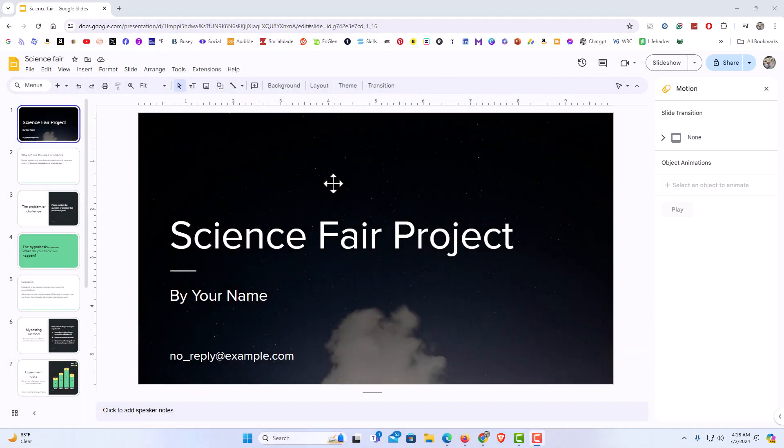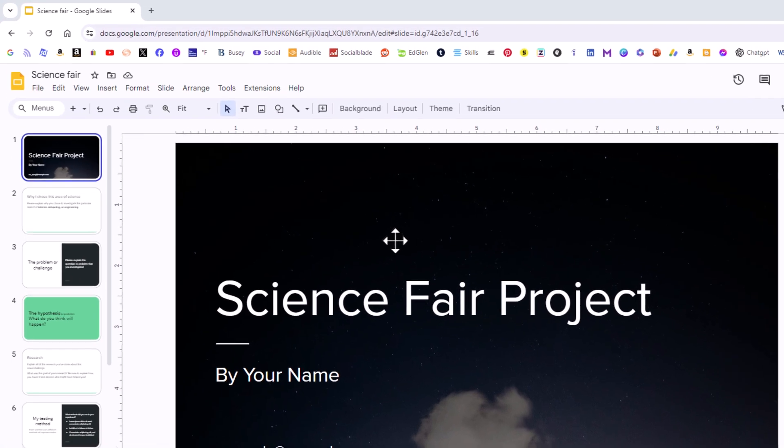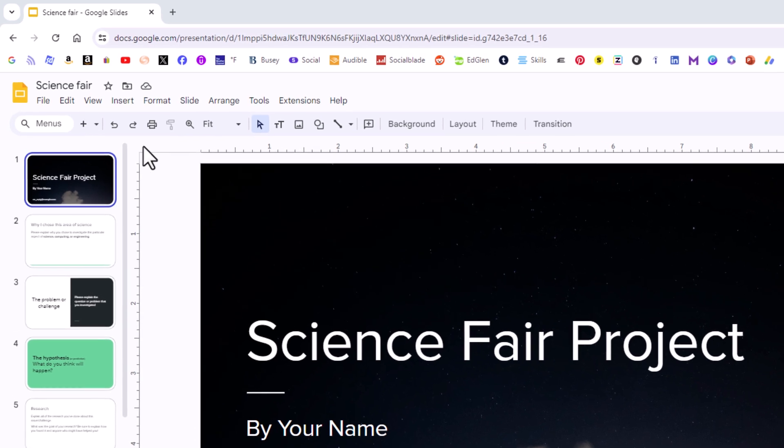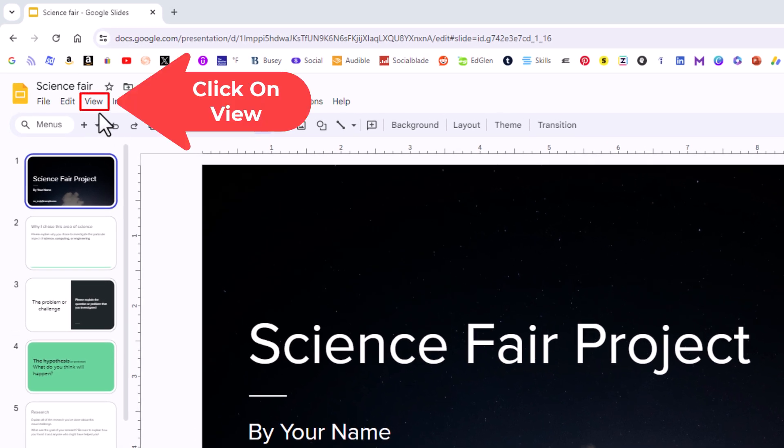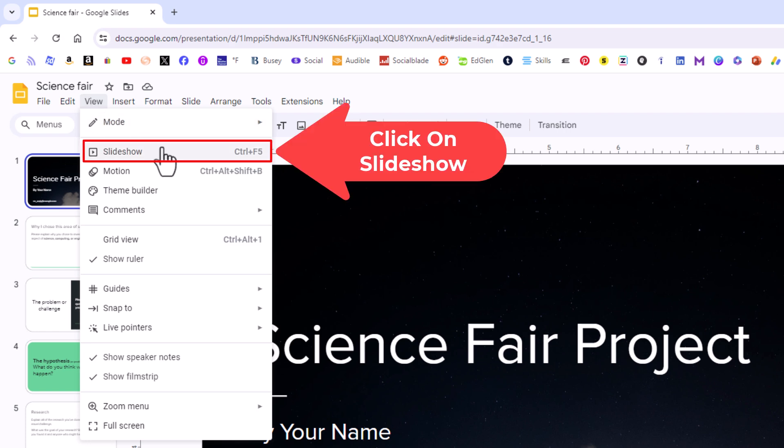I have my browser open now and I am on Google Slides. I have a little example project here. To play your slide presentation in Google Slides it's very easy to do. First, you want to go up to the top and click on the view tab. Then you want to go down to where it says slideshow and click on slideshow.